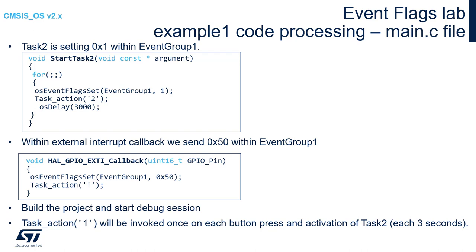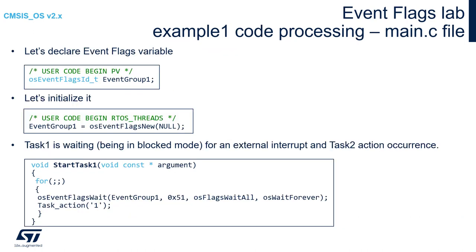Within the external interrupt procedure, please set the mask for EventGroup1 to 0x50 — again, it will be OR'd with the already existing value. Then within this callback, please send an exclamation mark over the SWO interface.